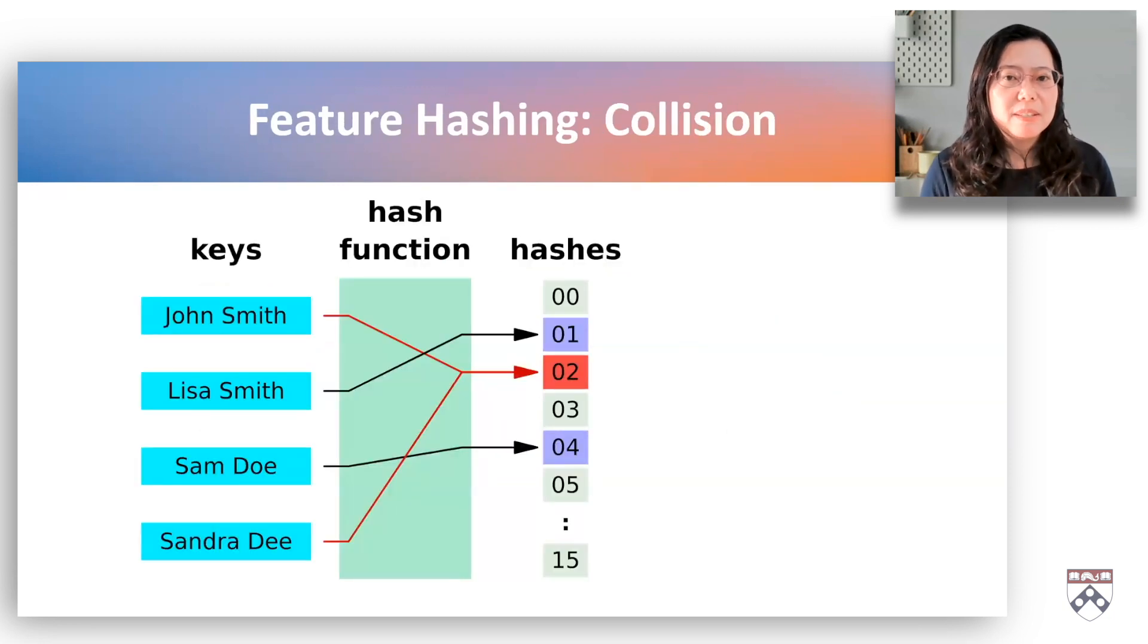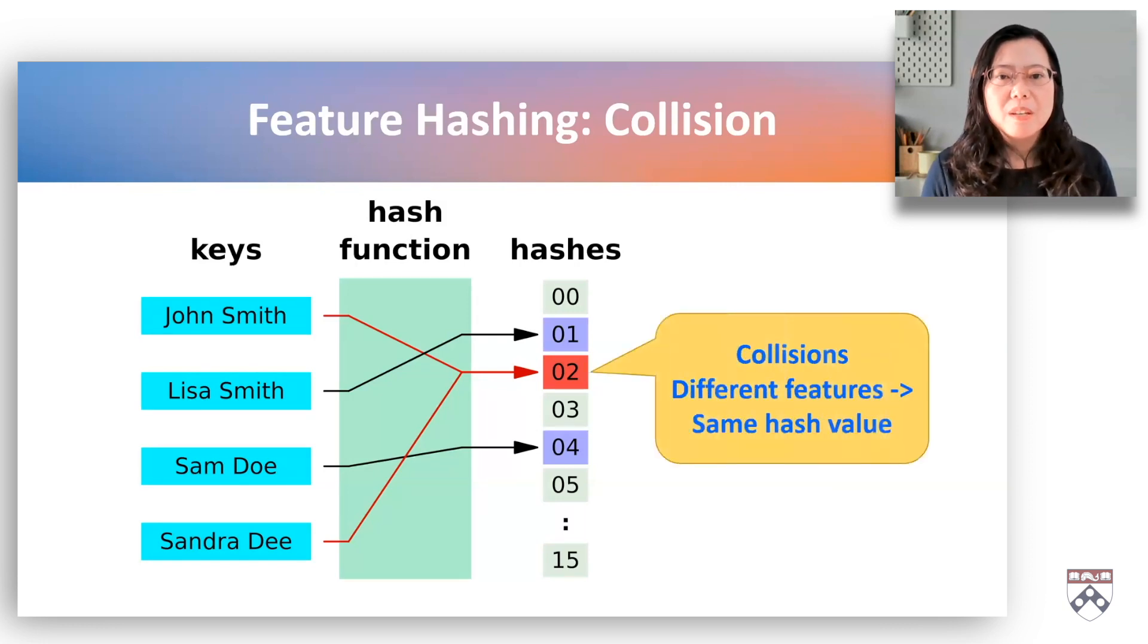Since the hash space is fixed, it's possible for different categories to hash to the same value. This results in clearance. In this example, both John Smith and Sandra Dee shared the same hash value 02.